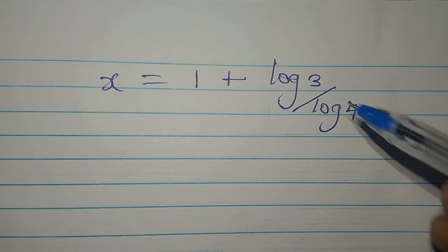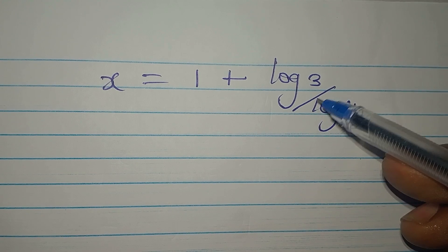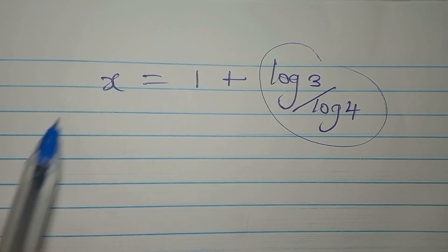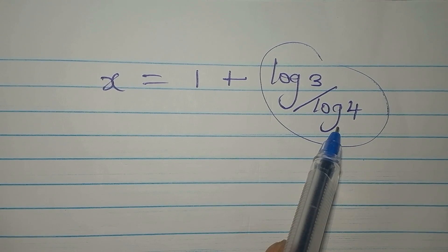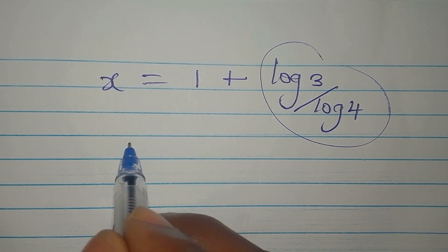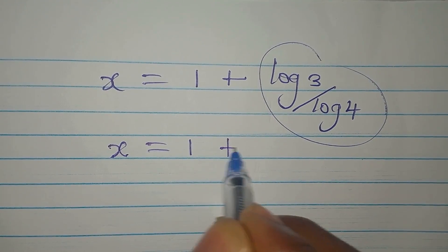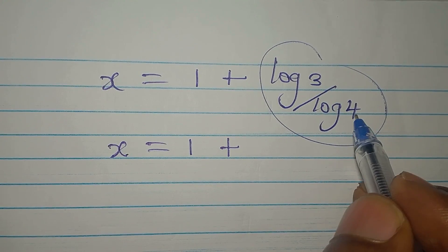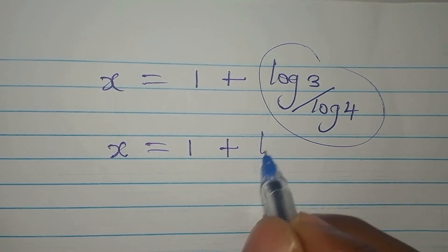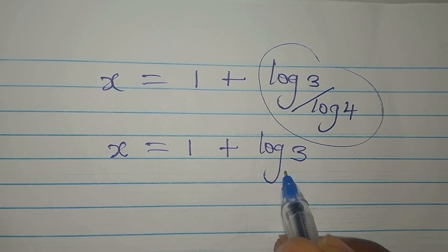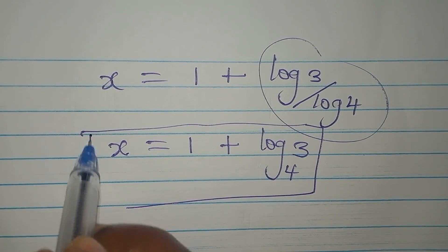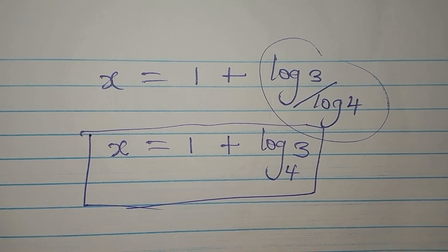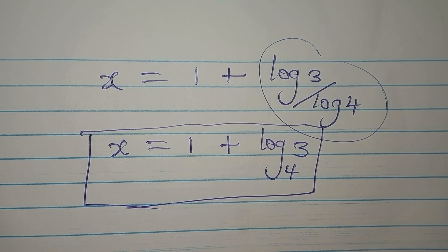We can apply the change of base rule. Since log 3 and log 4 are both to base 10, log 3 over log 4 equals log base 4 of 3. So x equals 1 plus log₄3. If you want the decimal form, you can calculate log 3 over log 4 on a calculator.